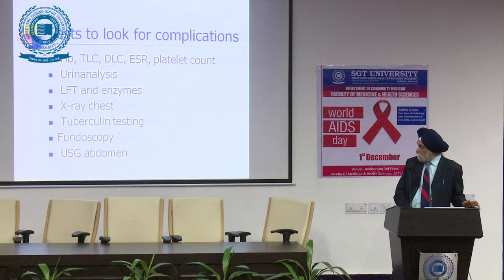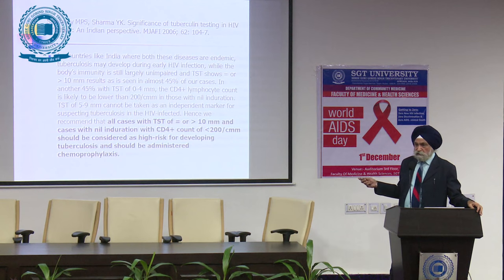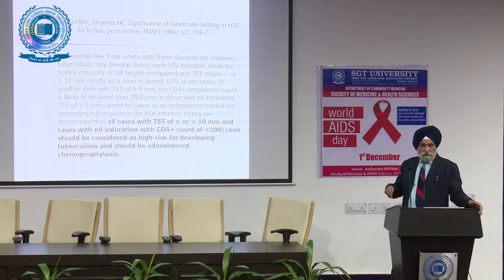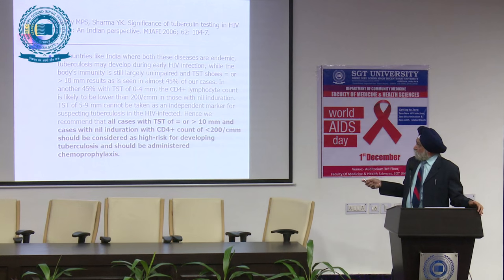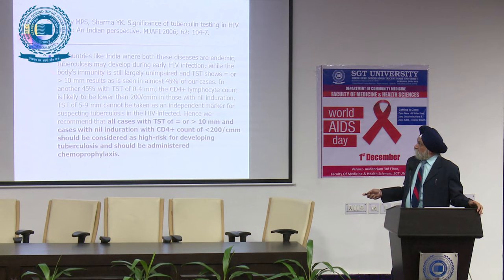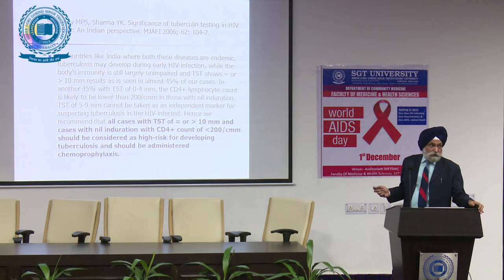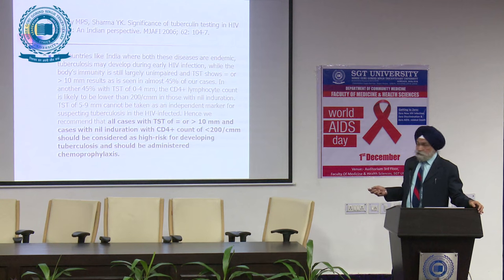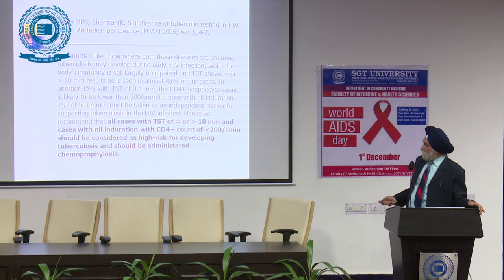A study on tuberculosis in the Indian setting: Western guidelines recommend that in HIV settings, more than 5 mm tuberculin positivity warrants TB chemoprophylaxis. But India is endemic for both TB and HIV, and patients can acquire TB even when CD4 count is good (above 500). In their study, more than 45% of cases had tuberculin testing positivity greater than 10 mm. They documented that cases with tuberculin skin test equal to or more than 10 mm, nil induration, and CD4 count less than 200 should be considered high risk and administered TB prophylaxis.